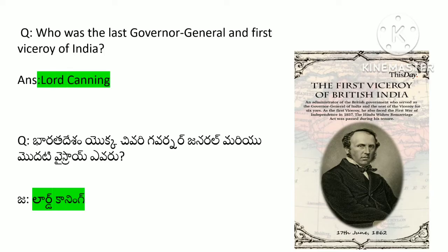Who was the last Governor General and first Viceroy of India? The answer is Lord Canning. Lord Canning was the last Governor General and the first Viceroy of India. The first governor general was Warren Hastings and the last governor general was Lord Canning.